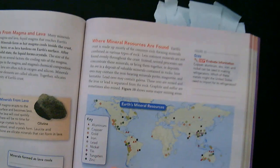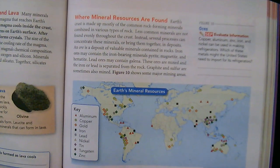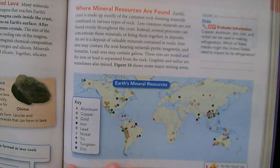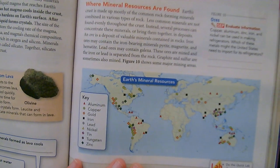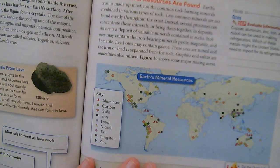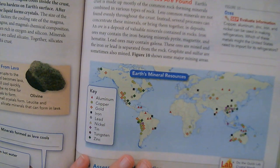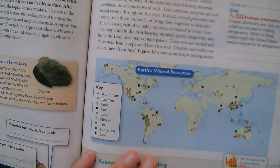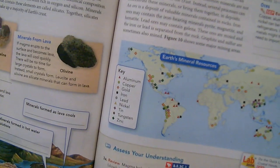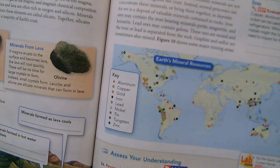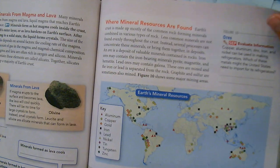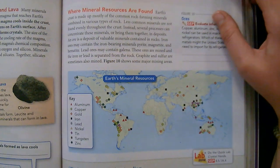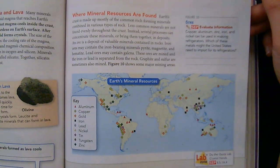Where mineral resources are found. Earth's crust is made up mostly of the common rock-forming minerals combined in various types of rock. Less common minerals are not found evenly throughout the crust; instead, several processes can concentrate these minerals or bring them together in deposits. An ore is a deposit of valuable minerals contained in rocks. Iron ores may contain the iron-bearing minerals pyrite, magnetite, and hematite. Lead ores may contain galena. These ores are mined and the iron or lead is separated from the rock. Graphite and sulfur are sometimes also mined. Figure 10 shows some major mining areas.